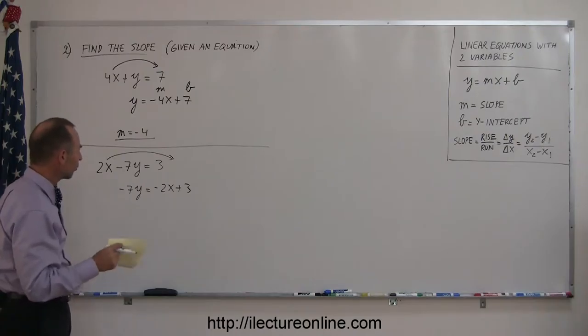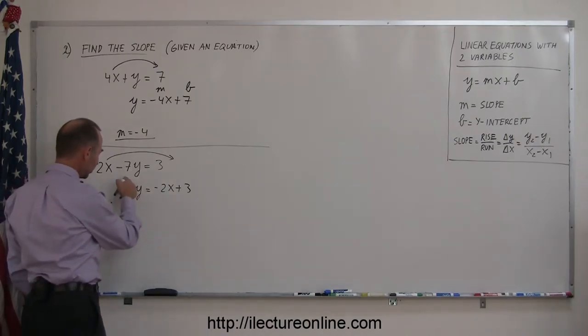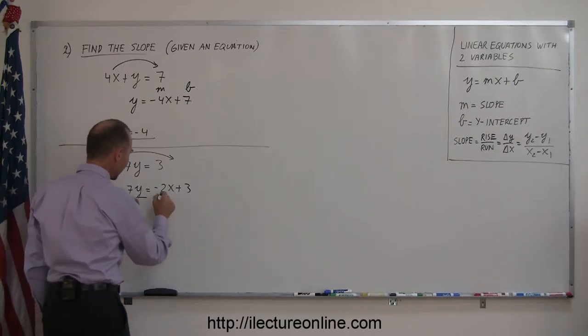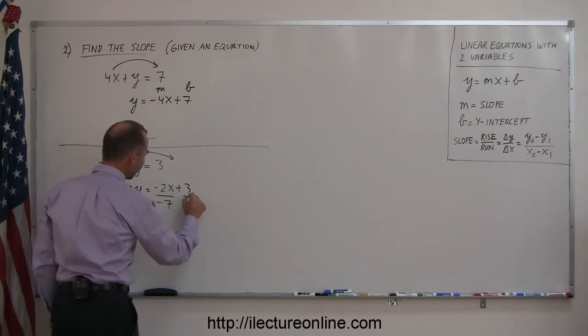That means we want to divide both sides of the equation by the numerical coefficient of y, so divide the left side by minus 7, and divide each term on the right side by a minus 7.